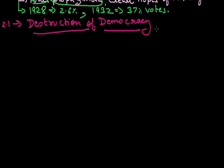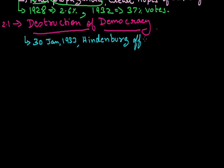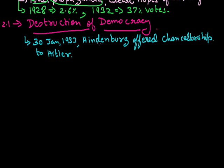Destruction of Democracy in Germany: On 30th January 1933, President Hindenburg offered the Chancellorship to Hitler. Though Hindenburg did not like the Nazi party, because the Nazi party was the only single largest party, he offered Hitler to become the head of the executive, which is known as Chancellor in Germany.